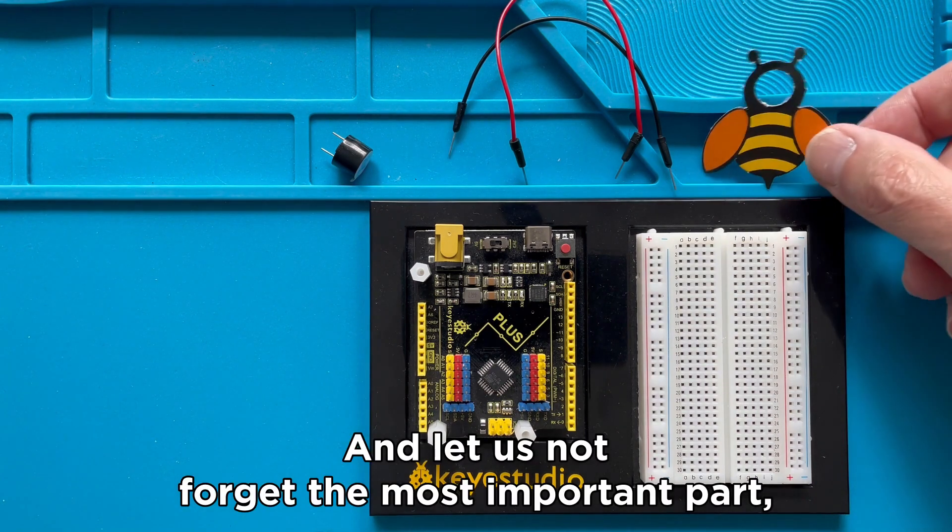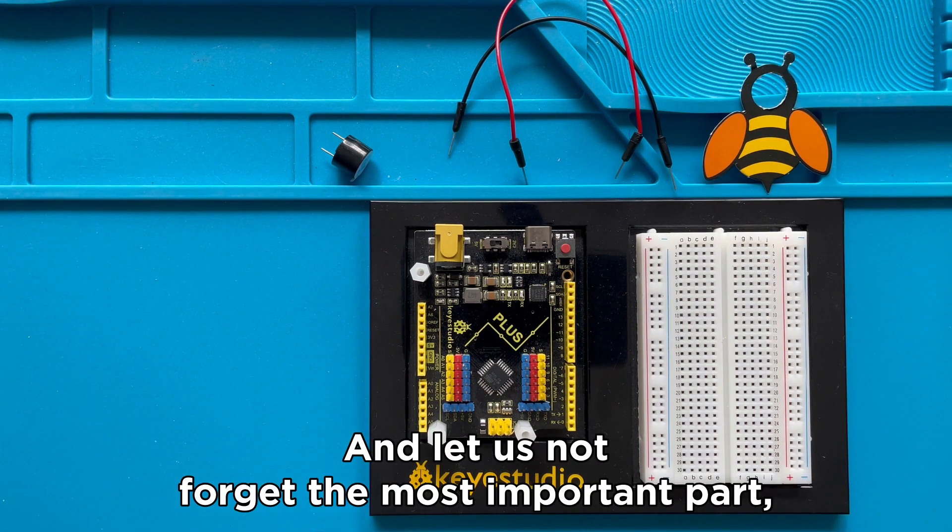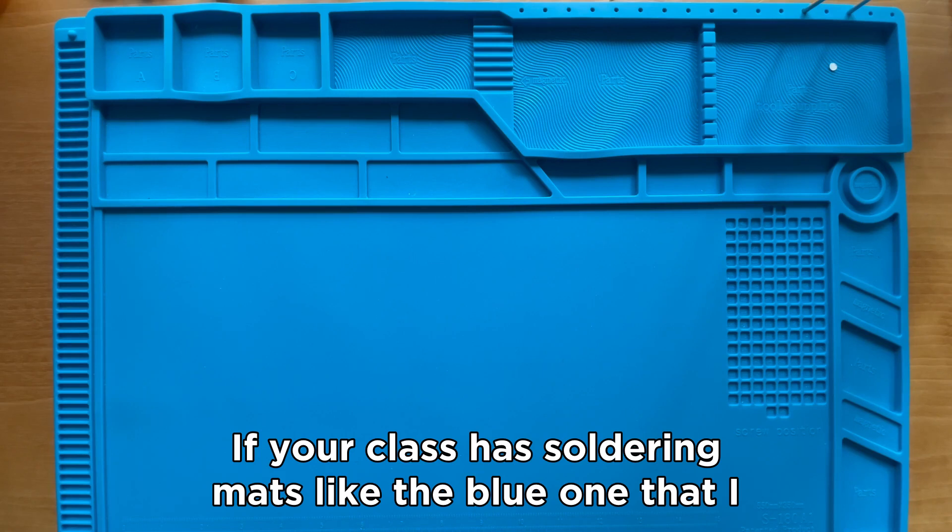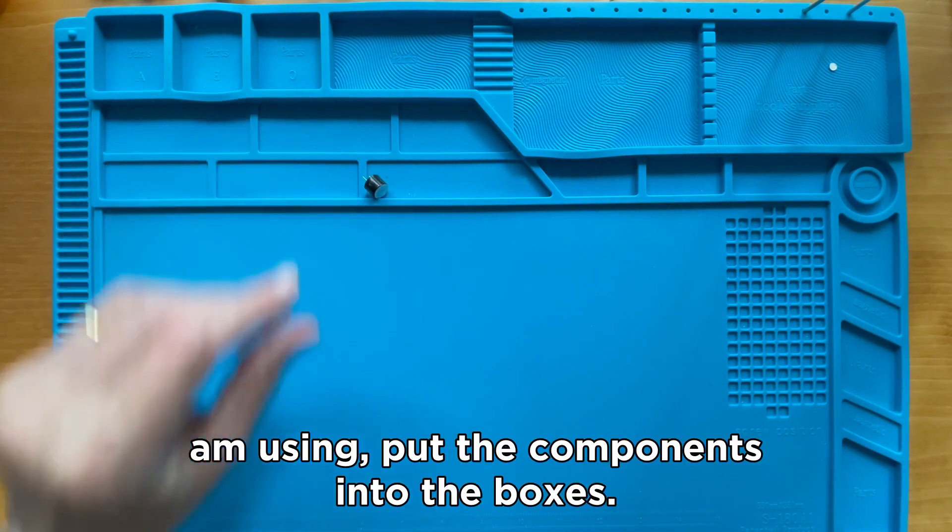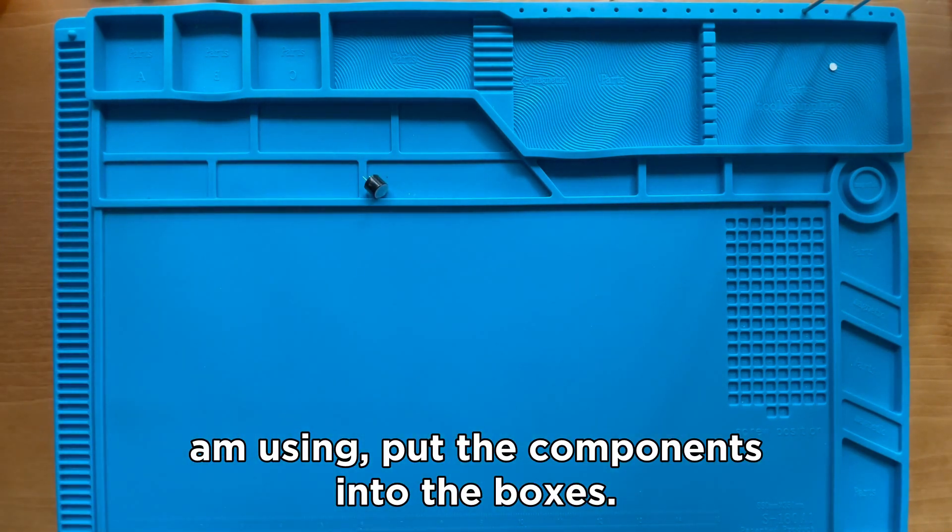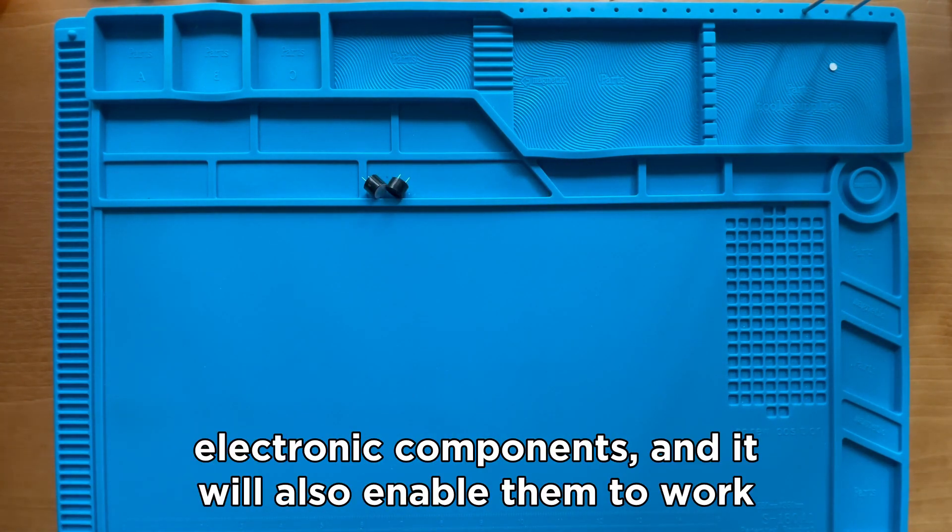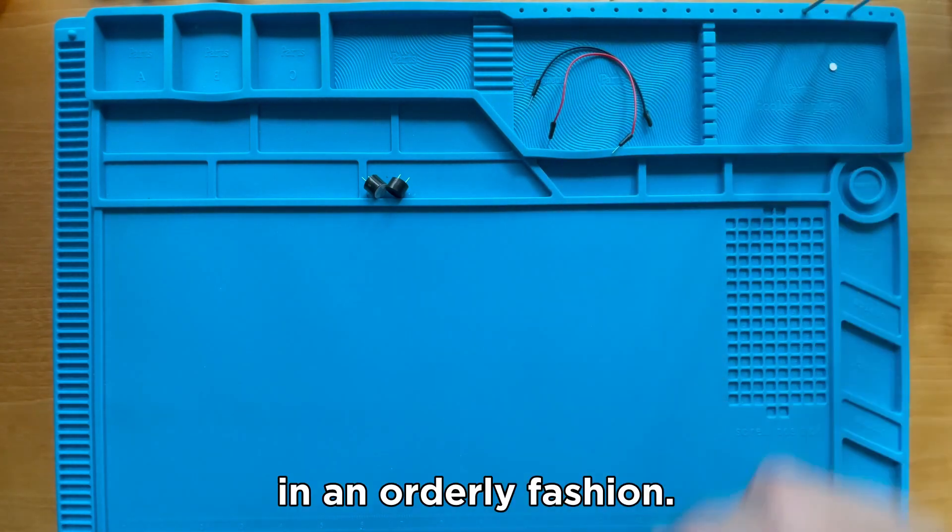And let us not forget the most important part, the Cardboard Bee. If your class has soldering mats like the blue one that I am using, put the components into the boxes. It will help your students not to lose the electronic components. And it will also enable them to work in an orderly fashion.